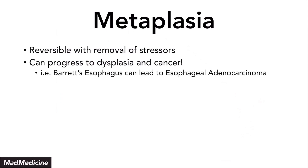Barrett's esophagus can become esophageal adenocarcinoma, which can be very deadly. There are three main types of metaplasia you need to remember: apocrine metaplasia, vitamin A deficiency-related metaplasia, and mesenchymal metaplasia.